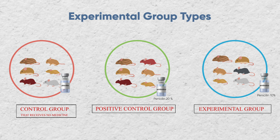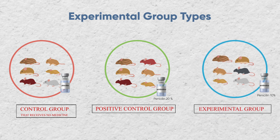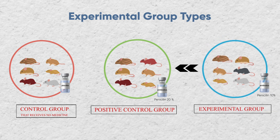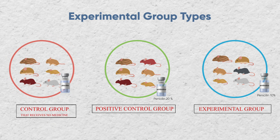So now you have three groups. They are: the control group that receives no medicine, the experimental group that has Penicillin 10%, and the positive control group that receives Penicillin 20%. In this experiment, you are comparing Penicillin 10% with Penicillin 20% and the group that receives no medicine. Penicillin 10% is the experimental group, Penicillin 20% is the positive control group, and the no-medicine group is the negative control.